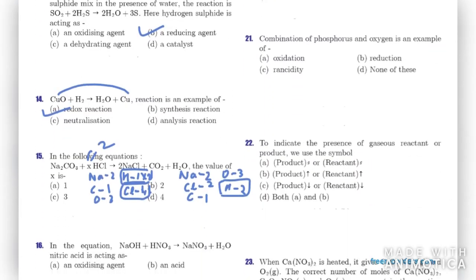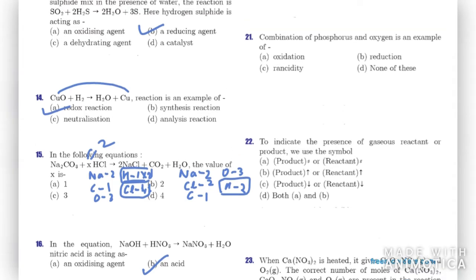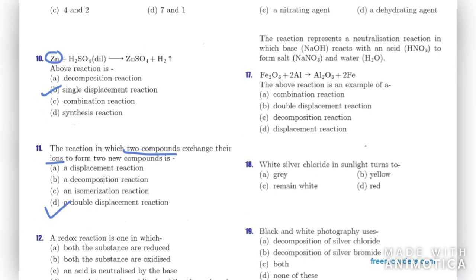Question sixteen: in the given equation, nitric acid HNO3 reacts to form salt NaNO3 and water. So nitric acid is acting as an acid here — not as an oxidizing agent, nitrating agent, or dehydrating agent. It is simply acting as an acid.